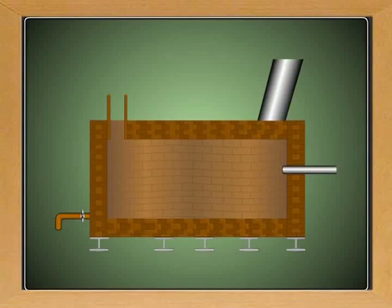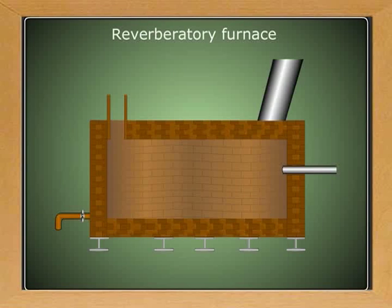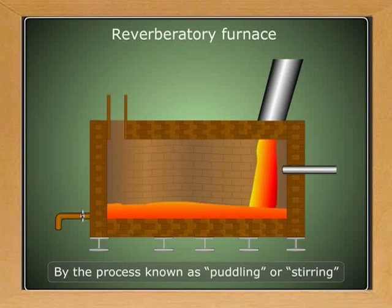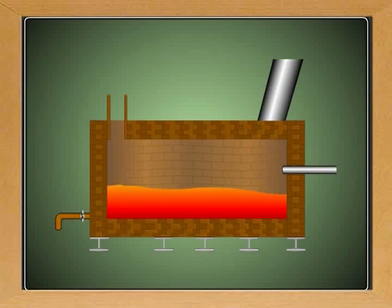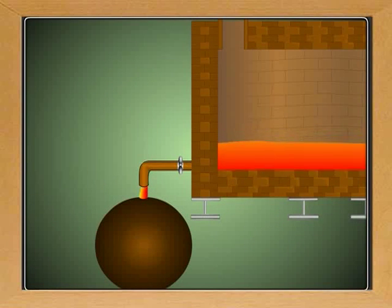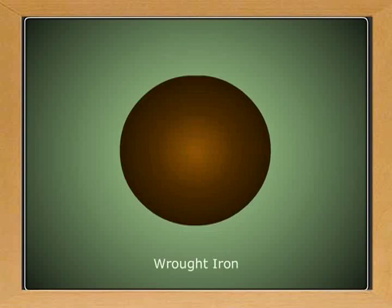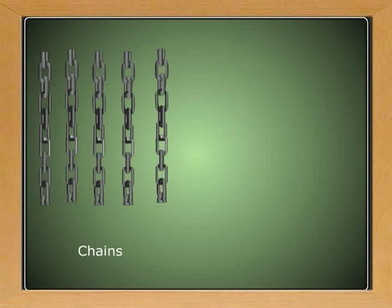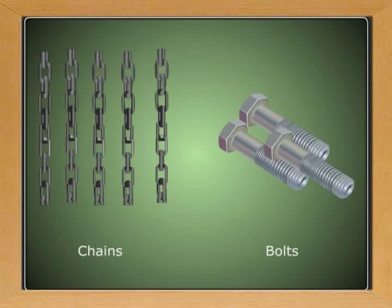Cast iron is purified by heating on the hearth of the reverberatory furnace by the process known as puddling or stirring. The melting point of iron is raised, resulting in the loss of impurities, and iron attains a semi-solid state. At this stage, it is taken out in the form of balls. This is called wrought iron. It is used for making chains, bolts, etc.